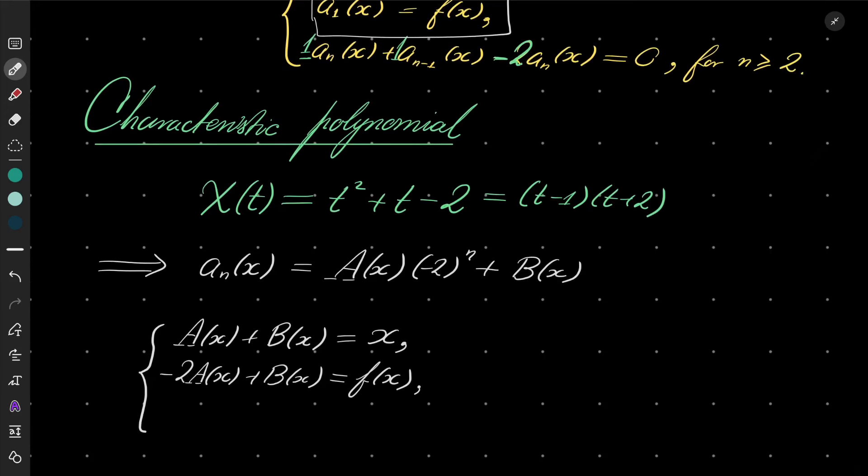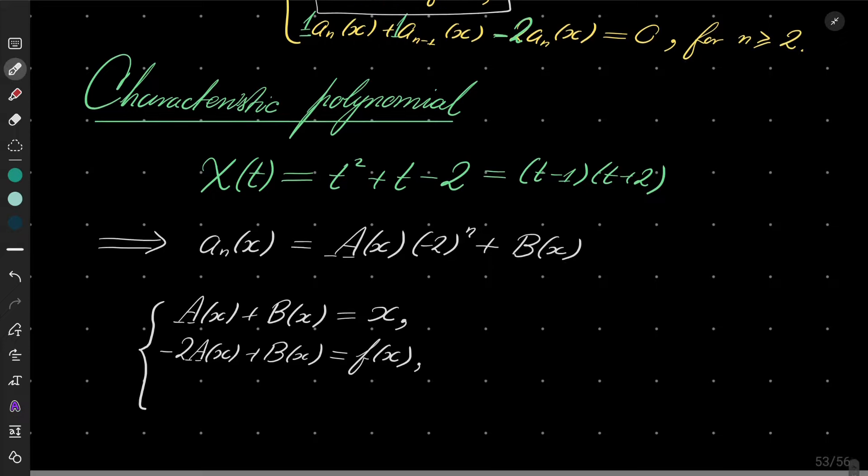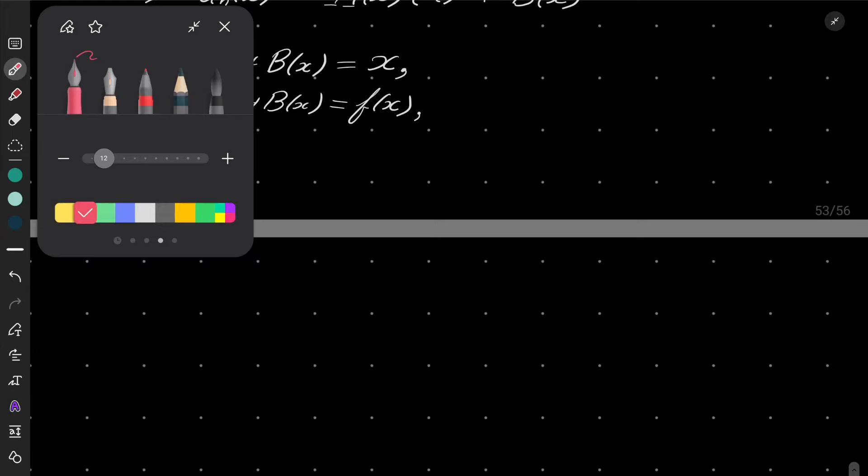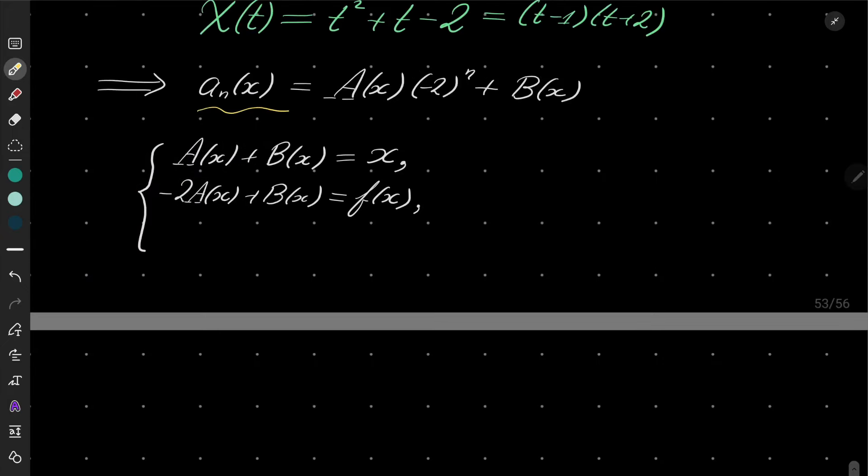What is that equation? Well, think about this formula: a_n(x) equals... I will put (-2)^n in front, and I have a(x) + b(x)/(-2)^n.